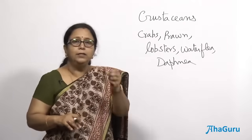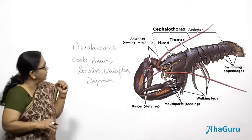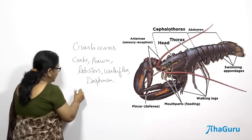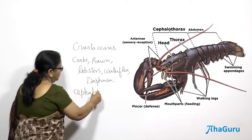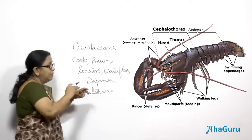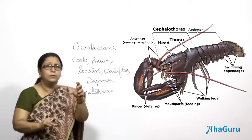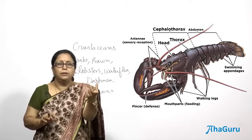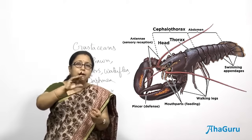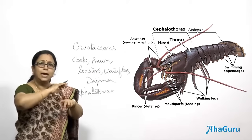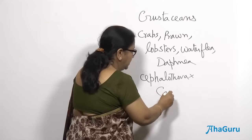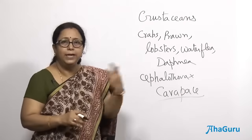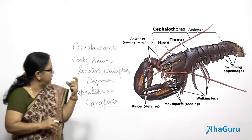What are the special features of Crustacea? The head and the thorax have combined to form a common structure called the cephalothorax. The cephalothorax gets impregnated with calcium salts, making it very hard — you can see this in crabs and lobsters. Once impregnated with calcium salts, it is known as the carapace, which acts as armor against predators.